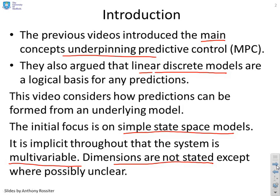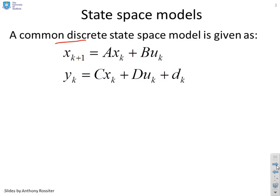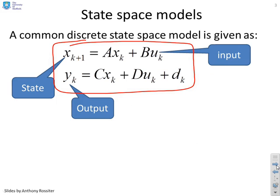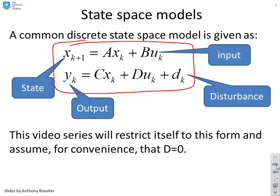A common state-based model is given by x_{k+1} = Ax_k + Bu_k and y_k = Cx_k + Du_k + d_k, where x is the state, y is the output, u is the input, and d is the disturbance. In this video series we're going to restrict ourselves to this form and assume for convenience that d equals zero, so that particular term is going to disappear.